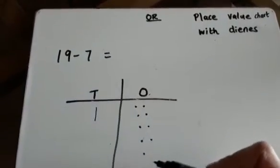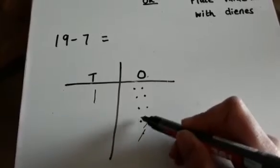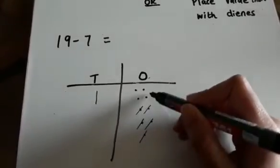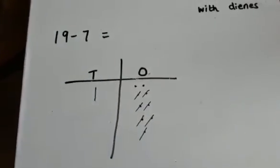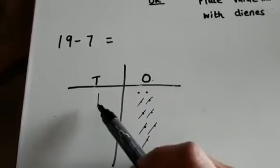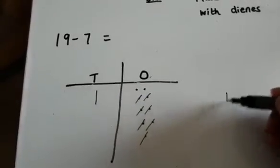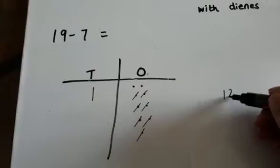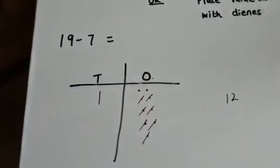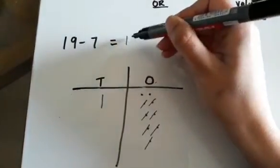So we're going to cross out 7. 1, 2, 3, 4, 5, 6, 7. Now we need to see what's remaining. We've got 1 tens and 2 ones. So we know that 19 take away 7 equals 12.